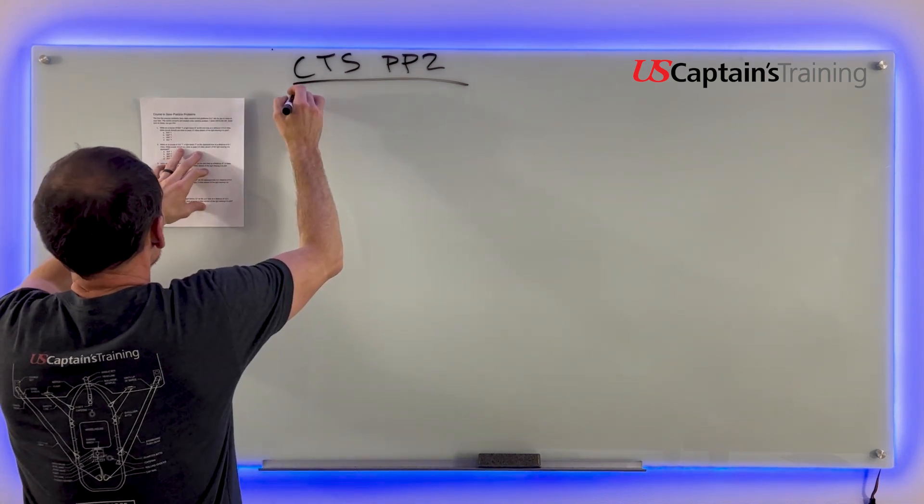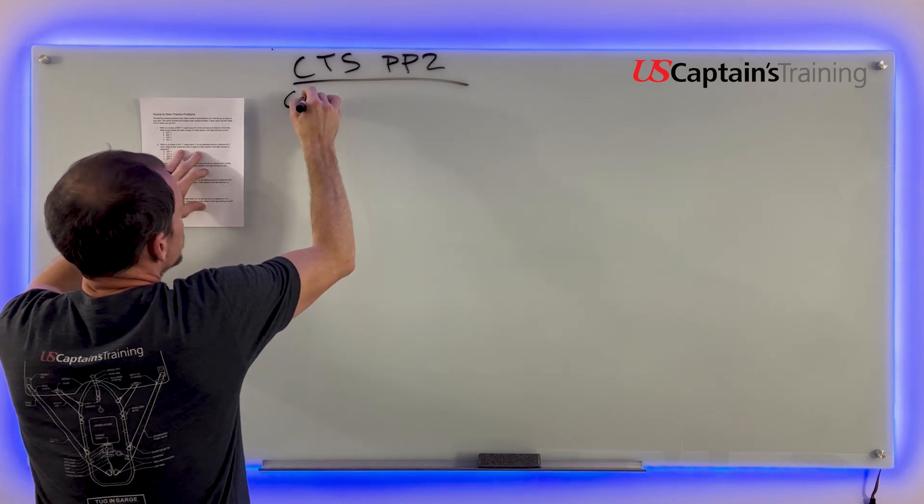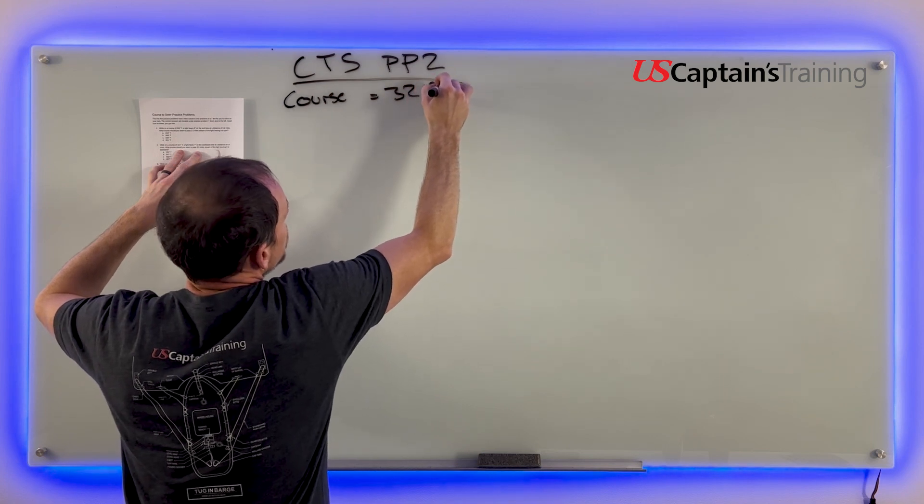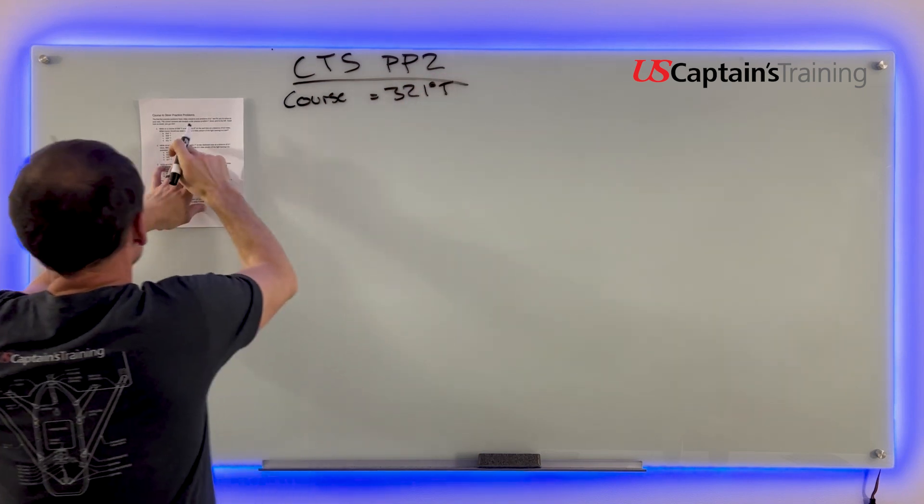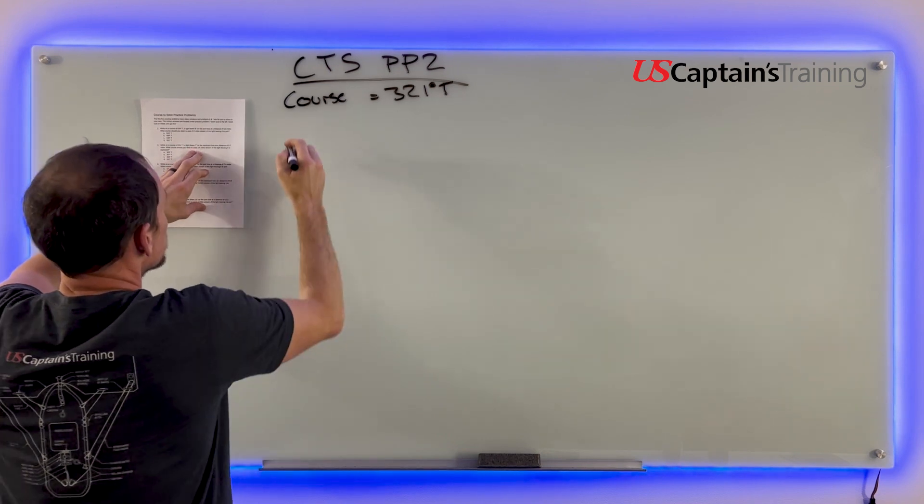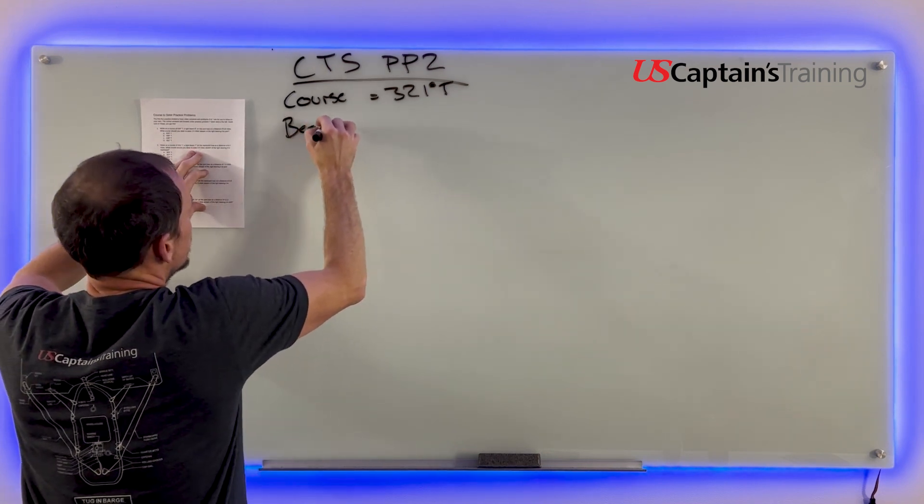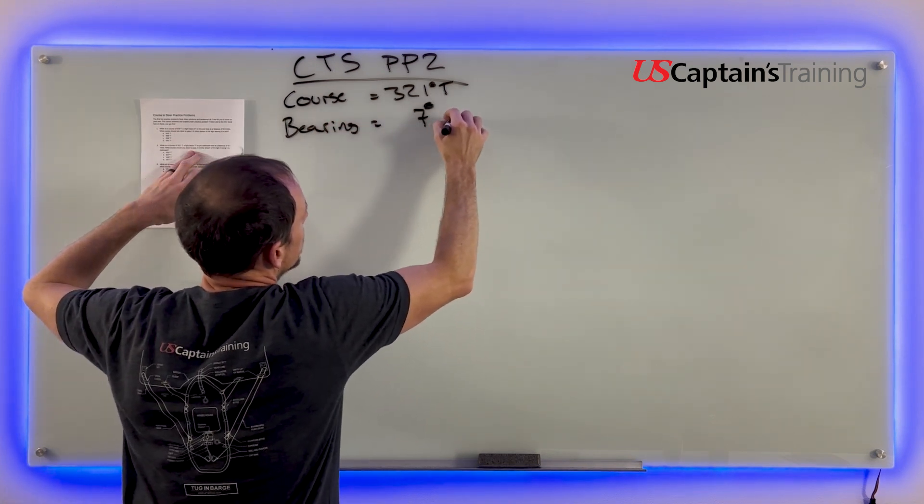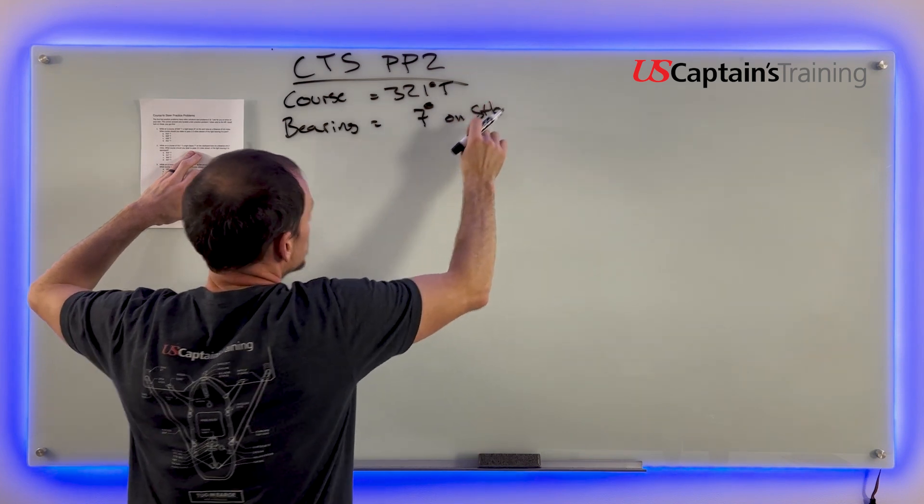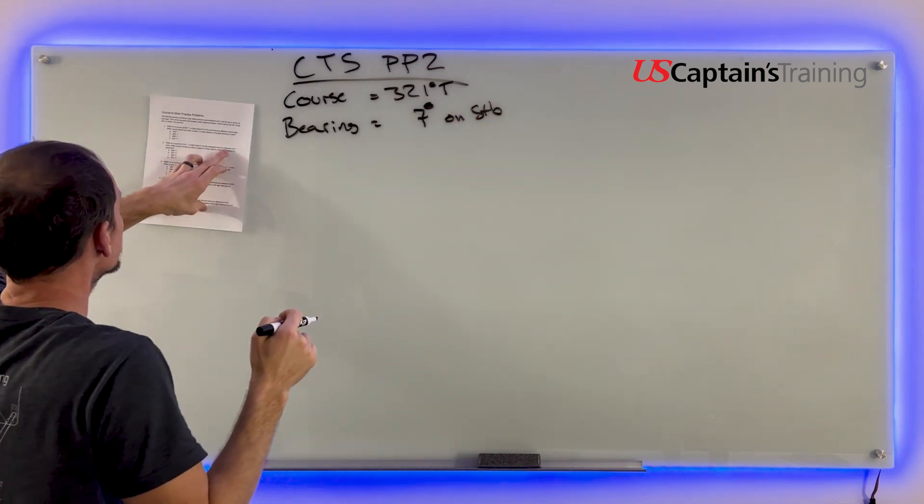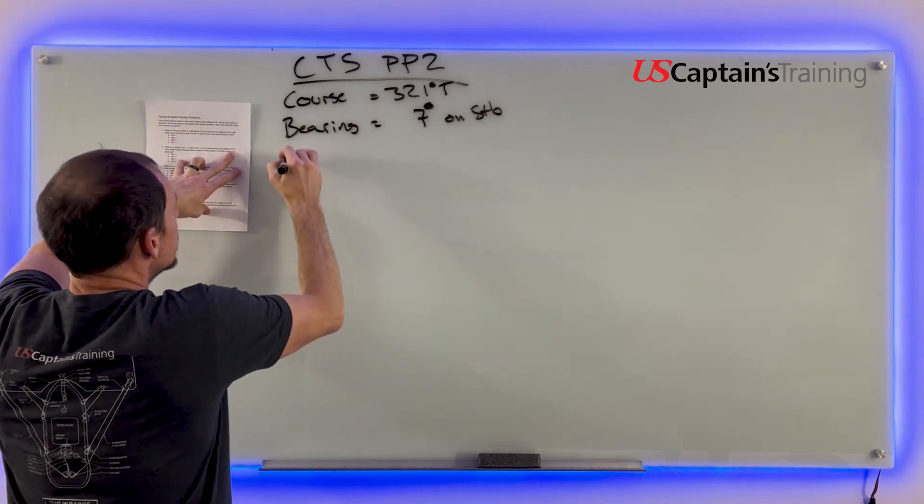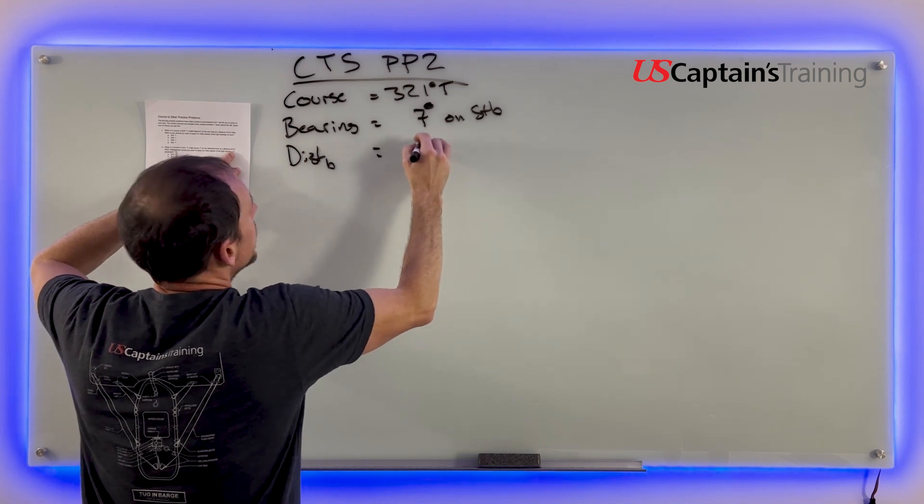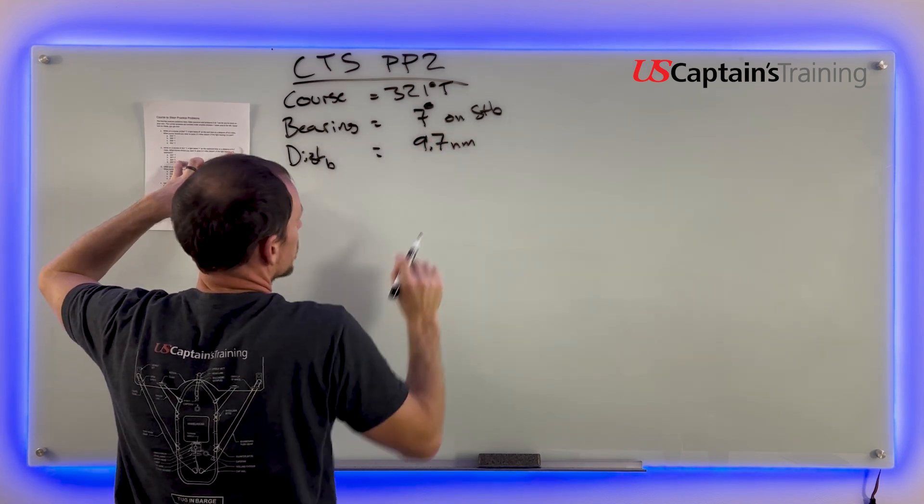The first thing it gave us, while on course 321 true. Course equals 321 degrees true. A light bears 7 degrees on the starboard bow, so it gave us a bearing equal to 7 degrees on the starboard side. And how far away was it? It gave us a distance, 9.7 miles. So the distance to the bearing was 9.7 nautical miles.